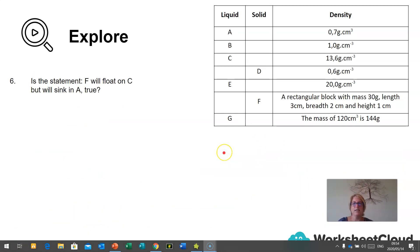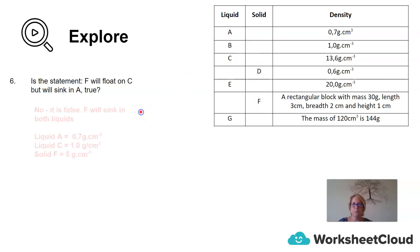Let's look at question 6. Is the statement F will float on C, but F will sink in A true? We have a solid block F. I want to see whether it's going to sink or float when I put it in C, and is it going to sink or float when I put it into A? No, it's false. F is going to sink in both liquids, because liquid A is 0.7 gram per centimeter cubed, liquid C is 1.5 grams per centimeter cubed, and solid F is 5 grams per centimeter cubed. It is definitely much more dense than both those liquids, so F will sink in both liquids. That was a tricky one, and I wonder if you got it right.